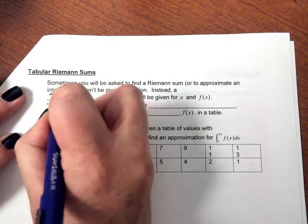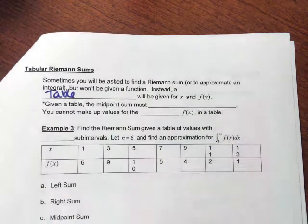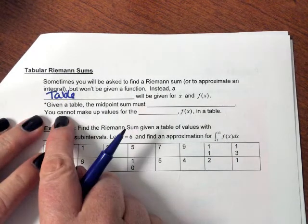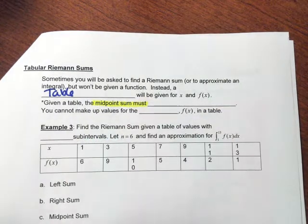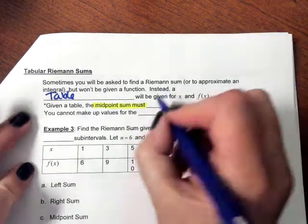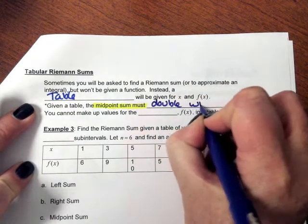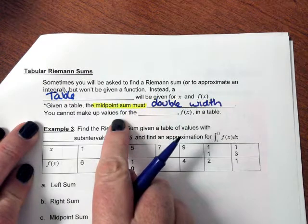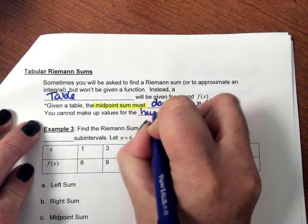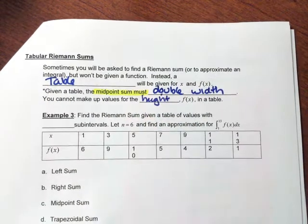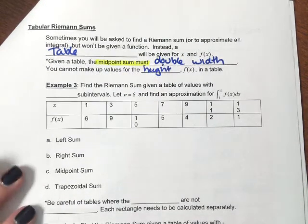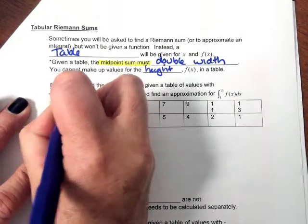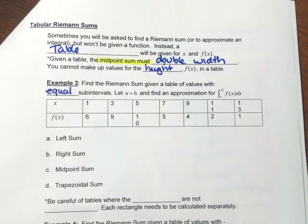You'll be using a table to calculate tabular Riemann sums. The trick is with the midpoint sum — it's a very deceiving term, and I'll explain why. We have to double the width because we cannot make up the values for f of x in the table. For example three, find the Riemann sum given the table with equal subintervals — six subintervals — to find an approximation of the integral from 1 to 13 of f of x dx. You've got to look at whether you're dealing with equal or unequal subintervals.